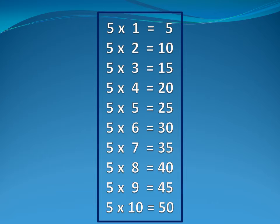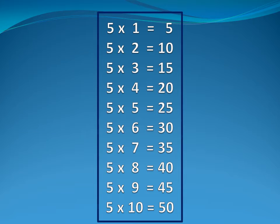Five five is twenty-five. Five six is thirty. Five seven is thirty-five. Five eight is forty. Five nine is forty-five. Five ten is fifty.